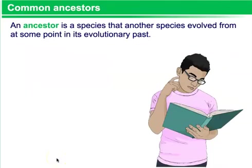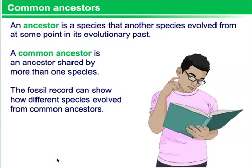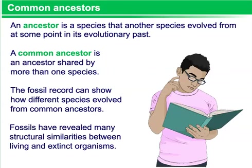Common Ancestors. An ancestor is a species that another species evolved from at some point in its evolutionary past. A common ancestor is an ancestor shared by more than one species. The fossil record can show how different species evolved from common ancestors. Fossils have revealed many structural similarities between living and extinct organisms.